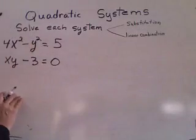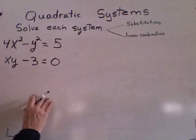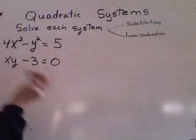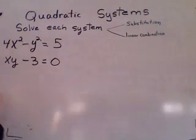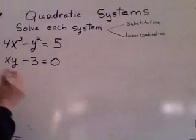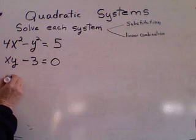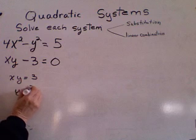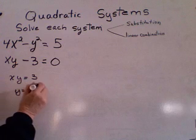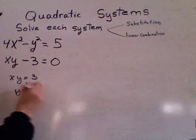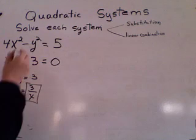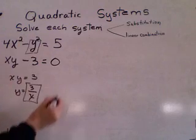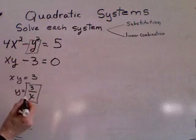Okay, let's go with another substitution problem to solve for the system. So, again, solve one of them for x or y. This one's easier to solve, so I'm going to solve it. x, y equals 3, y equals 3 over x. That's going to be my substitution in place of y in the other equation.